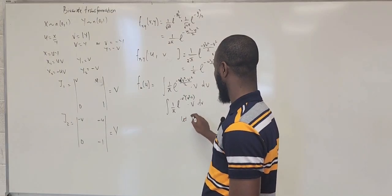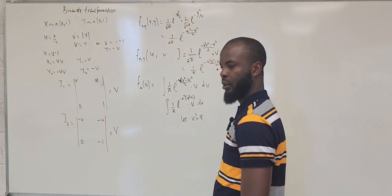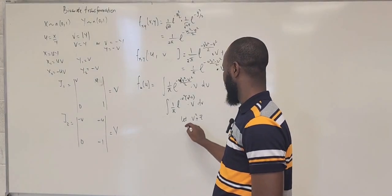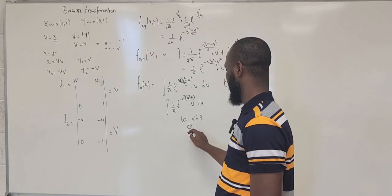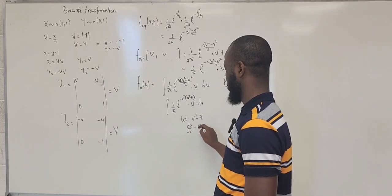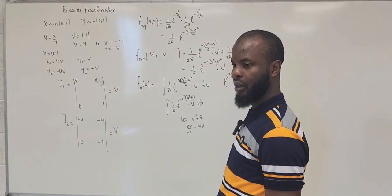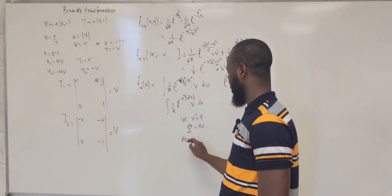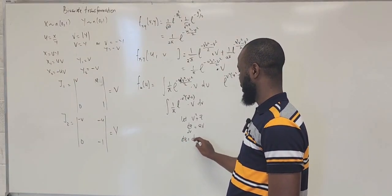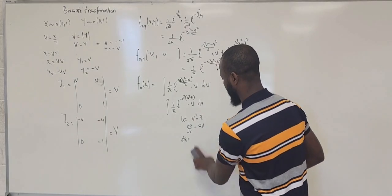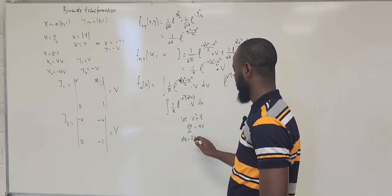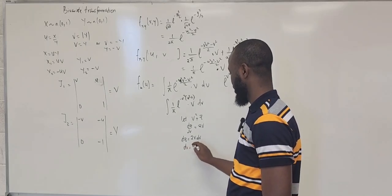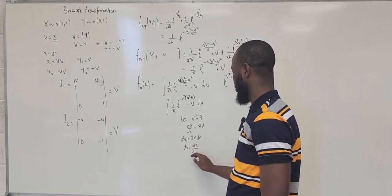Let v squared equal z. Then dz/dv is 2v, so dz equals 2v dv, which means dv equals dz over 2v. We do have v and v in the integrand, so they will cancel out.